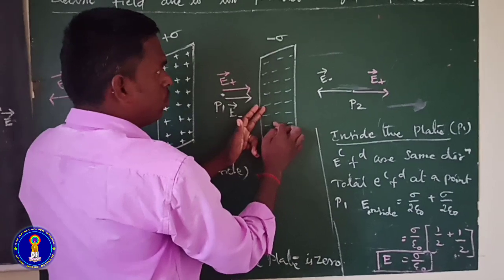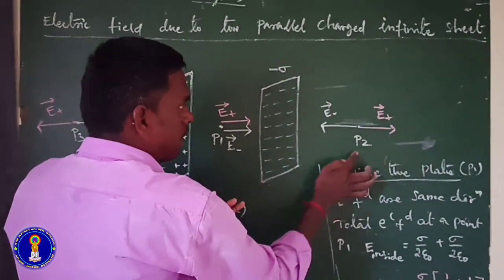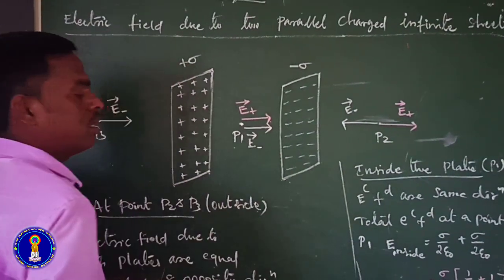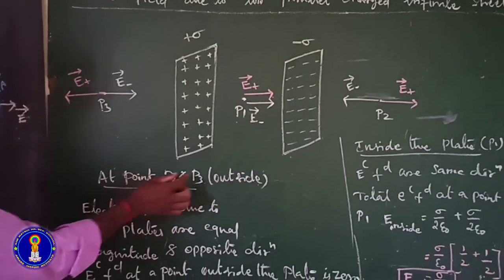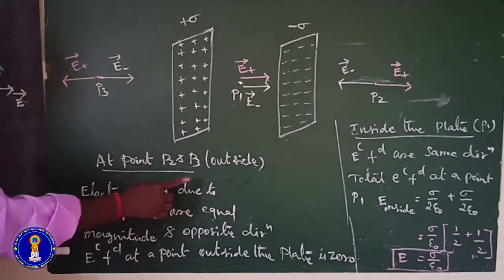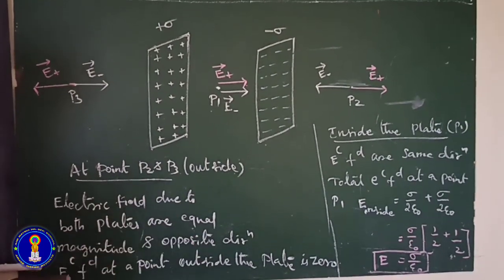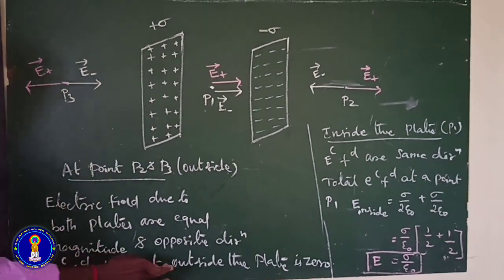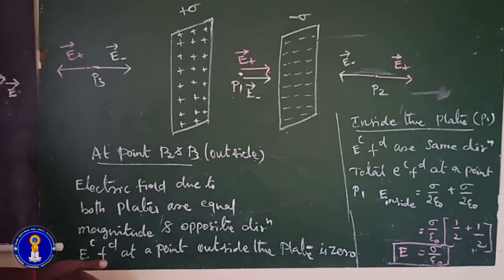This is towards the negative charge, so the resultant of these two fields is zero. At points P2 and P3, the electric field due to both plates are equal in magnitude and opposite in direction, so the electric field at a point outside the plate is zero.